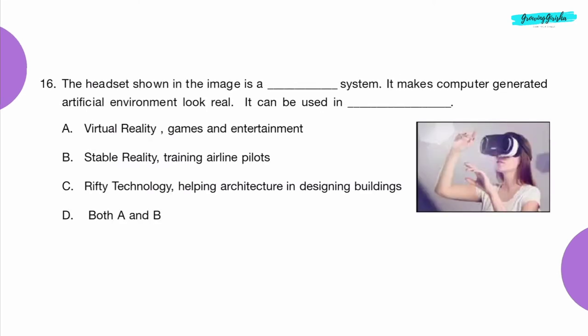Question 16: The headset shown in the image is a dash system. It makes computer-generated artificial environments look real. It can be used in dash. Option A: Virtual reality — games and entertainment.